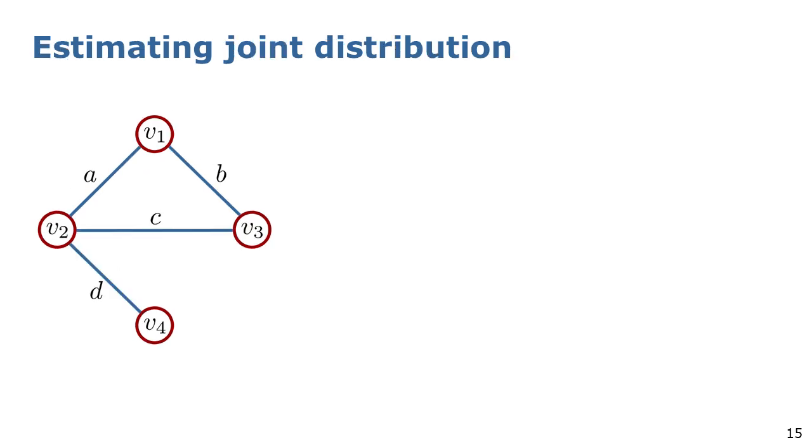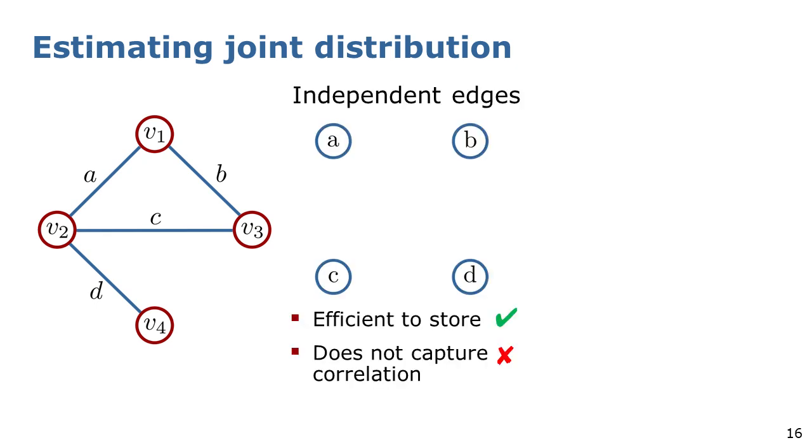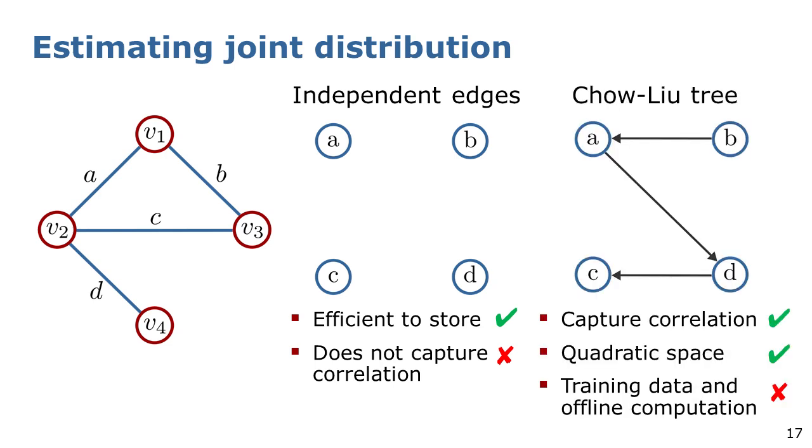There exist different approaches to compute a tractable approximation of the joint distribution. The simplest one is to consider all edges to be independent from each other. This is very efficient to compute and store, but is not able to capture the correlation among edges. Another common approach is to use the Chou Liu-Tree approximation that uses a tree-structured Bayesian network to approximate the joint distribution. This approach is able to capture some correlation between the variables and requires only quadratic space. However, it requires training data and offline computation.